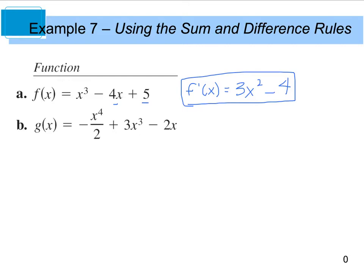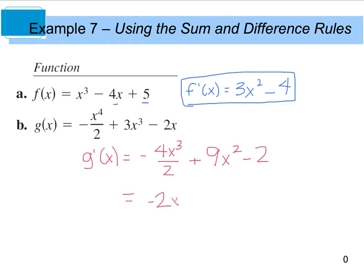Likewise, for g'(x): we have a negative 4x³ divided by 2, plus 3 times 3, which gives us 9x² minus 2. We can simplify this down to -2x³ + 9x² - 2, and that will be our final answer.